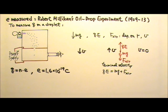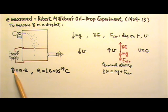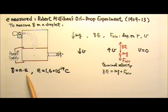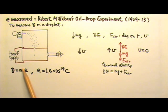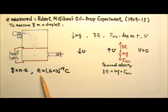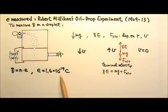Millikan would do this for many droplets. He discovered that the amount of charge on a droplet is quantized: Q equals a whole number N times the elementary charge e. He found the common factor, the elementary charge, to be very close to what we use today: e equals 1.6 times 10 to the negative 19th Coulombs.